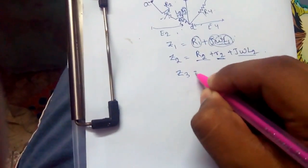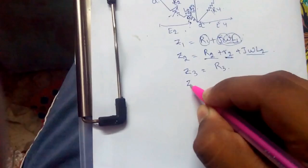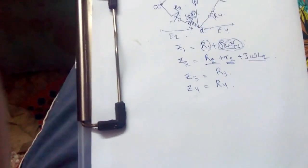Z3 would remain R3 itself. Similarly, Z4 would remain R4.